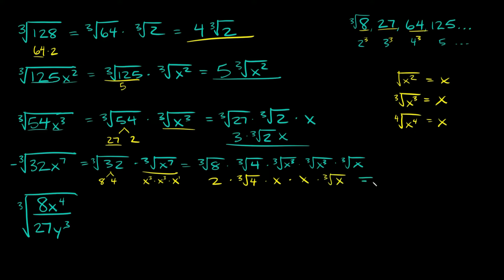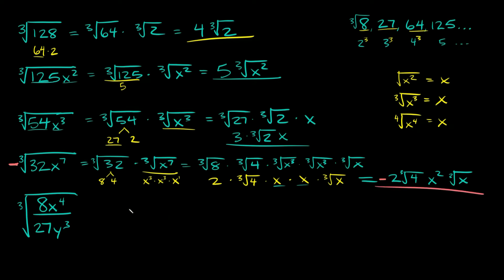Multiplying all this together: we get 2 times the cube root of 4, then x times x which is x squared, times the cube root of x. And don't forget we had a negative sign at the very beginning, so our answer is also negative. The final answer is negative 2 cube root 4 x squared cube root x. Ugly answer, but that's as simplified as we can get it.